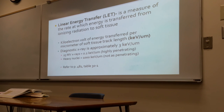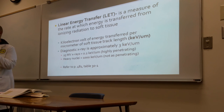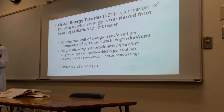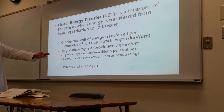When radiation is highly penetrating, it passes through tissue quickly and doesn't deposit a lot of energy. Radiation that is not highly penetrating takes longer to move through tissue and deposits more energy during that time, greatly increasing the chance of ionization in those cells.